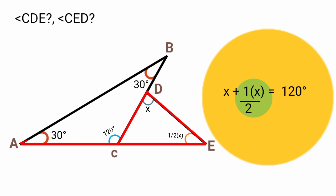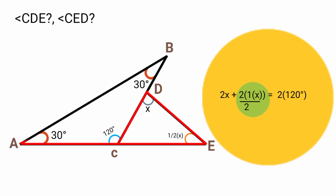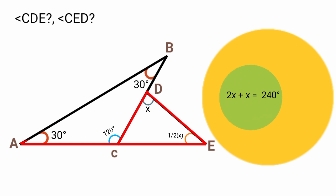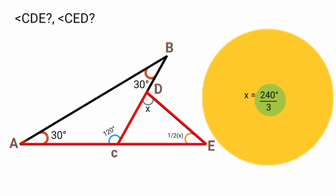Since this involves a fraction, we multiply both sides by the denominator 2. This gives x times 2 equals 2x, and one-half x times 2 equals x, and 120 times 2 equals 240. So 2x plus x equals 240, meaning 3x equals 240. Dividing both sides by 3 gives x equals 80.